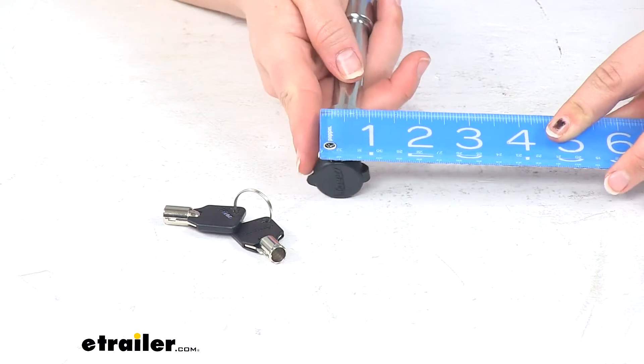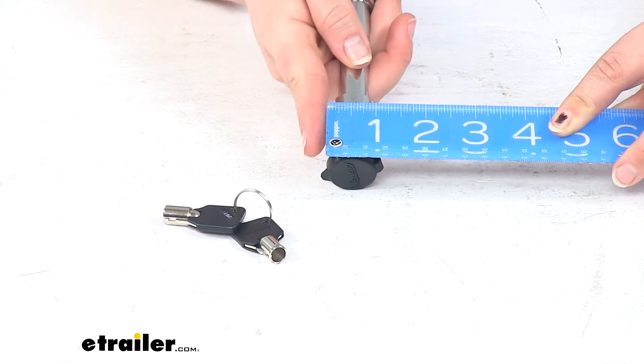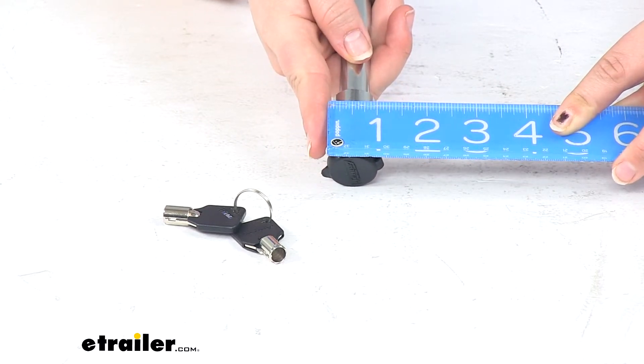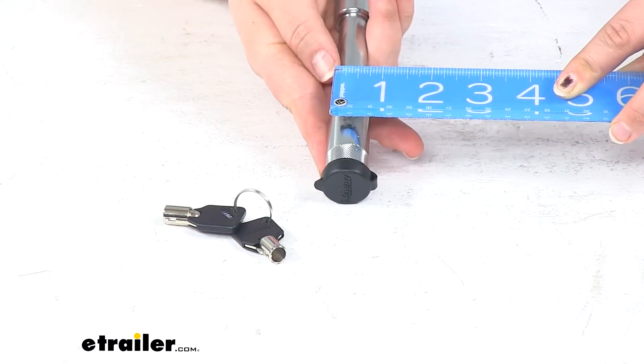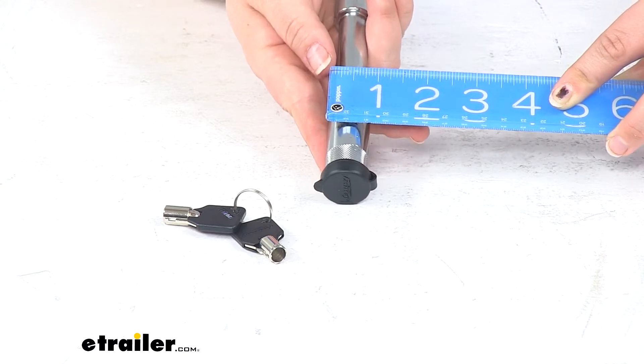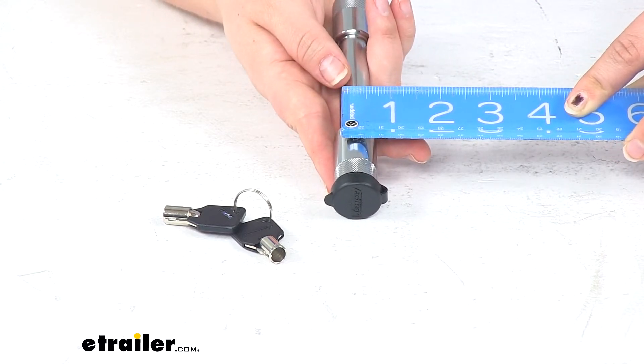And then the diameter on the two tumbler ends or the larger ends is about an inch in diameter. Again, the diameter in the middle portion there that actually goes through our hitch pin hole is 5/8 of an inch.